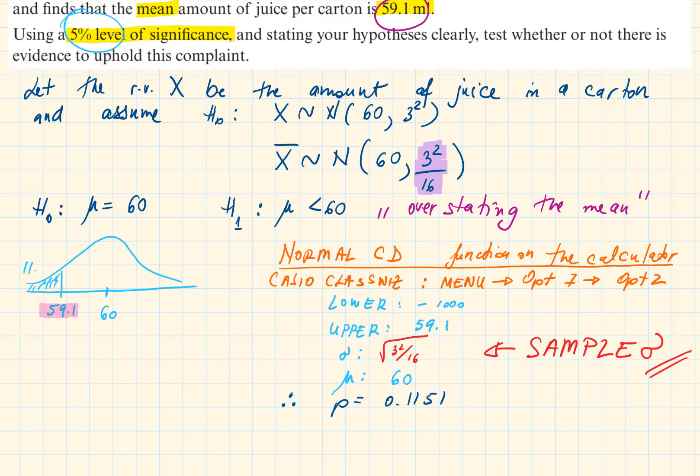The shaded part on this diagram is 11.51%. 11.51% is larger than 5%. So, we must write the inequality down as a conclusion. Once we have got this, we must write a two-step conclusion.